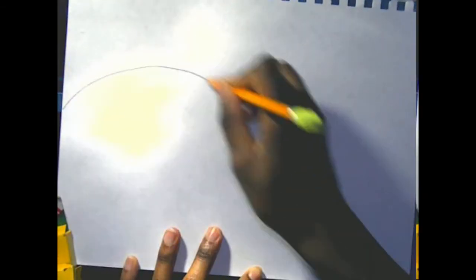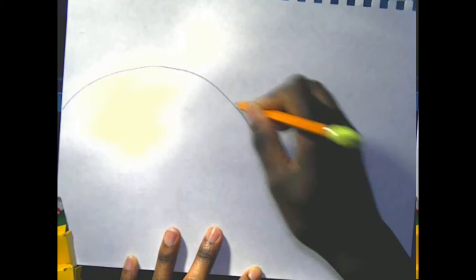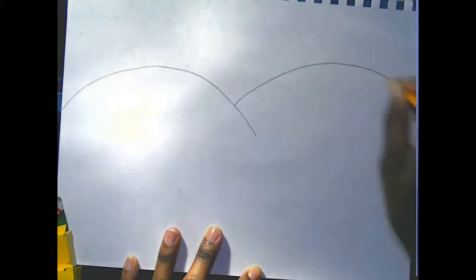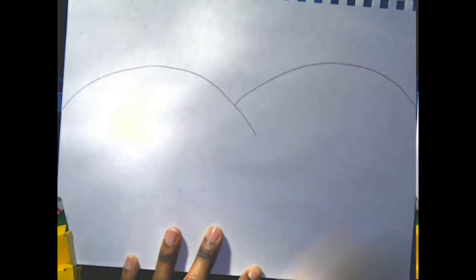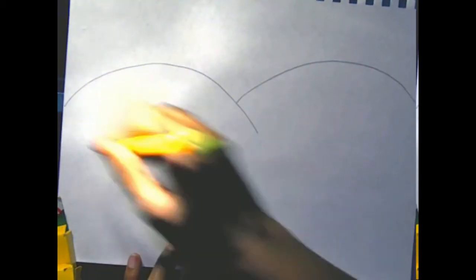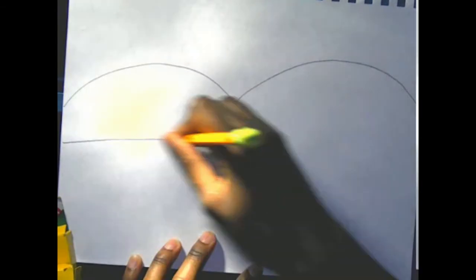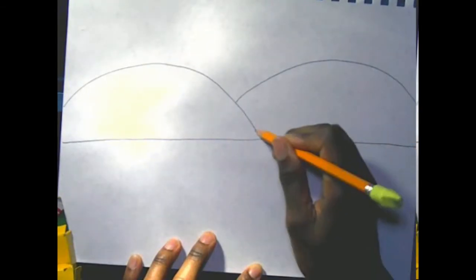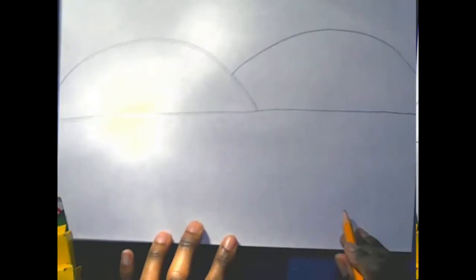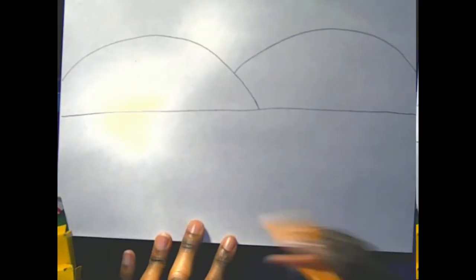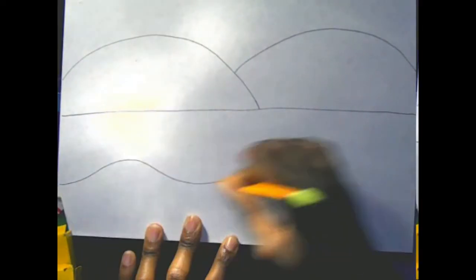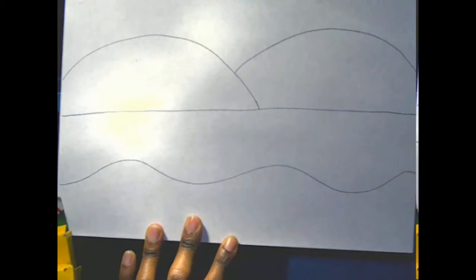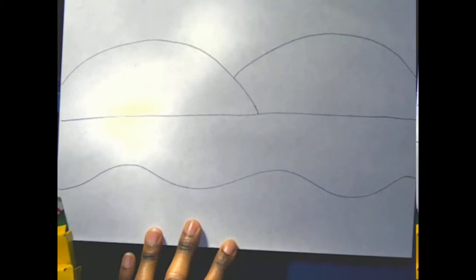I'm going to start off with my background. I have to make a background line. Maybe I'll do a curved line for a background. Now I need a mid-ground. I'll just do a straight line for my mid-ground. And for my foreground maybe I'll do a wavy line. That was three different kinds of lines.